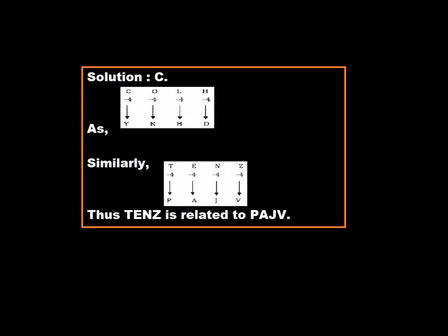Option C is correct. When COLH is added with 4 consequently, we get YKHD as the answer. Similarly, when TENZ is added with 4 consequently, we get PAJV as the answer. Thus, TENZ is related to PAJV. Hence, Option C is correct.